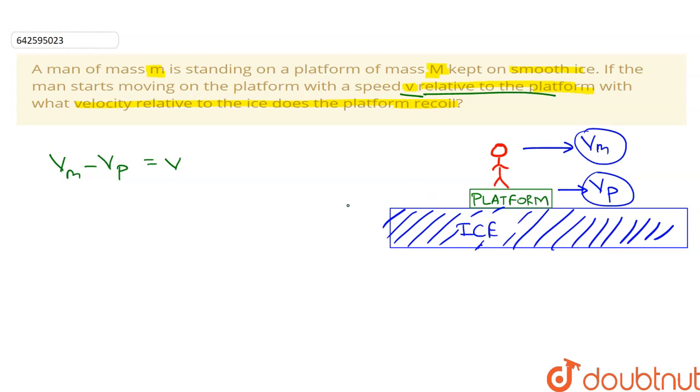We need to find vp, the velocity of the platform with respect to the ice. If we consider the man and the platform as a system, there is no external force acting on it. Therefore, ΣF = 0, which means the momentum of the system